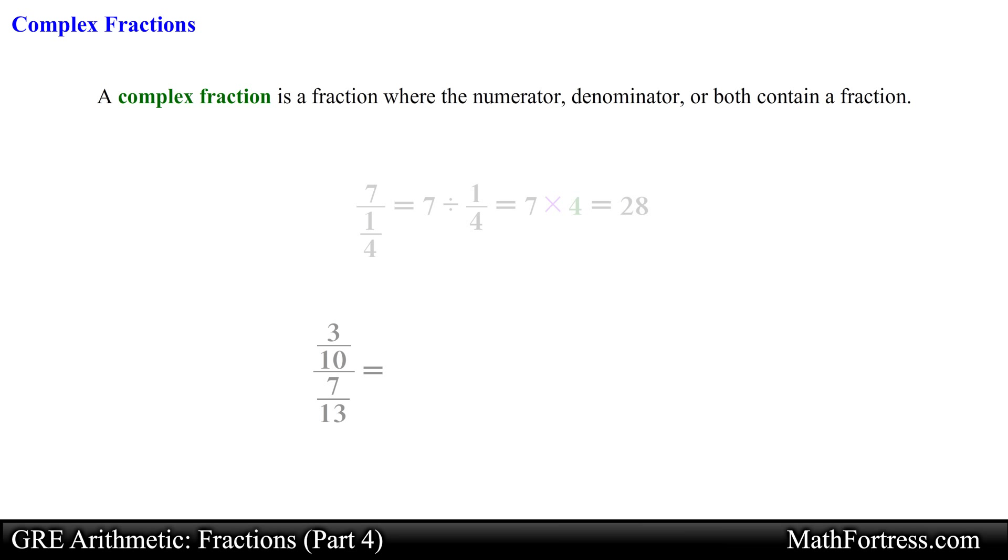Let's try an example where both the numerator and denominator are fractions. 3 tenths over 7 over 13. Once again the fraction bar is another way of denoting division. So we want to rewrite this problem as follows. This way we can proceed solving this problem by using the techniques that we are already familiar with. So we first find the reciprocal of 7 over 13 which ends up being 13 over 7. Then we go ahead and multiply across obtaining the final answer equal to 39 over 70.